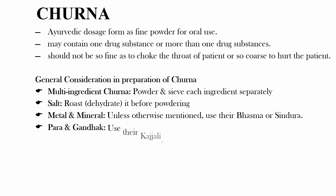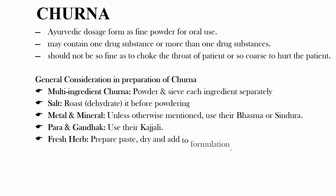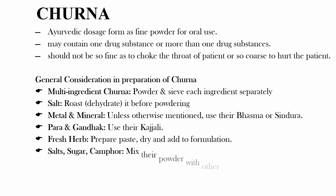In case of a Churn formulation having both Para and Gandhag, then prepare a Kajali from Para and Gandhag and use the Kajali in the formulation. In case of a Churn formulation having fresh herb as an ingredient, prepare a paste, dry, powder, and then add to the formulation. If the formulation of a Churn contains salt, sugar, and camphor-like substances, mix their powder with other ingredients at the end.